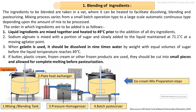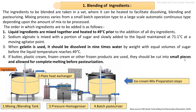In the blending process, liquid ingredients are taken first, pre-heated, and then dry ingredients are added. Some industries prepare the dry ingredients separately as a paste before adding them to the liquid. Butter, plastic cream, or frozen cream is melted and then added to the mix. Thickening agents or stabilizing agents are also prepared separately and then added to the blending tank, where all ingredients must be properly mixed.